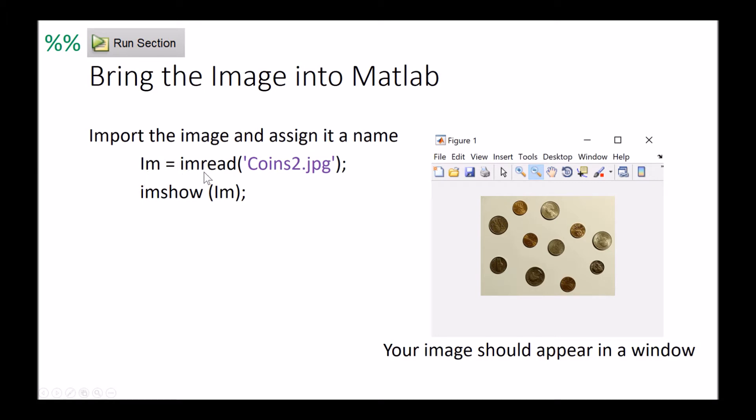To get the image in we're going to use imread and then just signify the file we want to open and assign it to a variable. We can then either using the command window or write in the code select imshow and it will display the image as such.